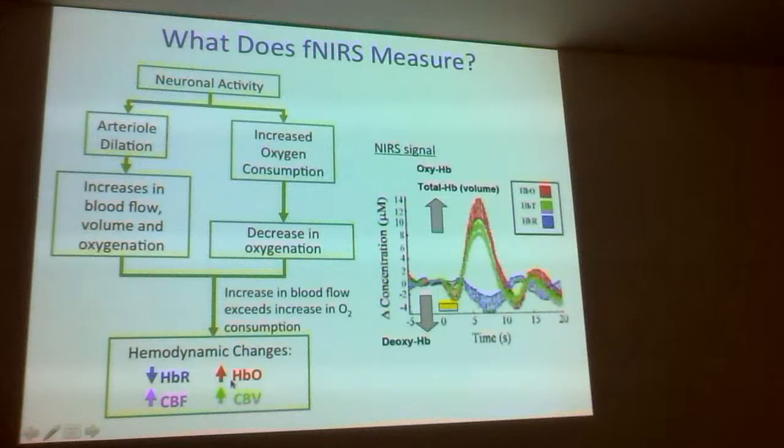Muscle has myoglobin, which acts as an oxygen reserve. People have talked about maybe a 'neuroglobin' that might exist in the brain as part of an oxygen reserve, but that's only been discussed in the last few years.